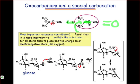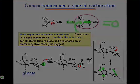Notice that in glucose, only a single hydroxyl group can leave in order to produce an oxocarbenium ion. All of the other hydroxyl groups would leave to produce unstabilized carbocations.